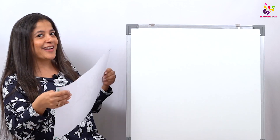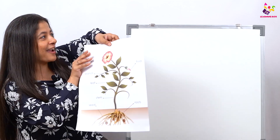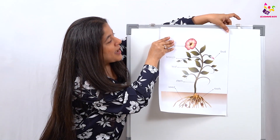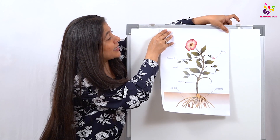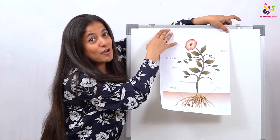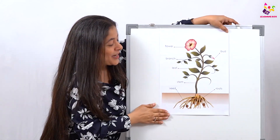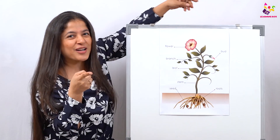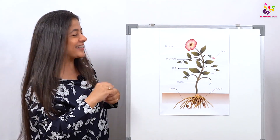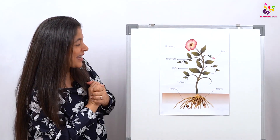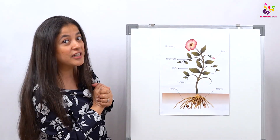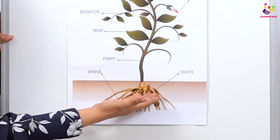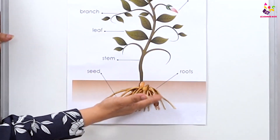And that's why today we are going to learn about the parts of a plant, with the Learning Box by Important Kids. So let's see which are the different parts of a plant. What do we have here under the soil?